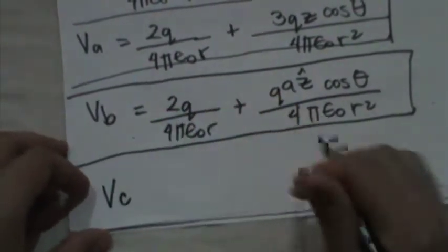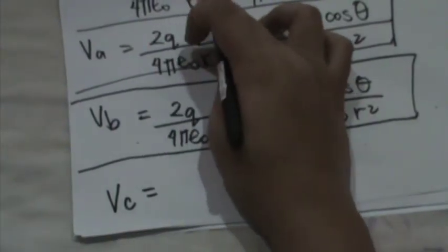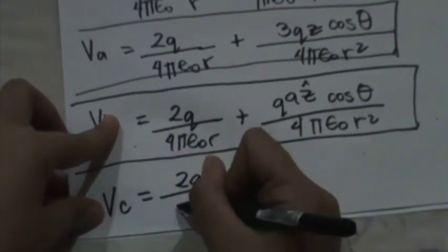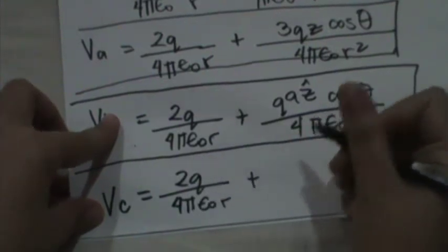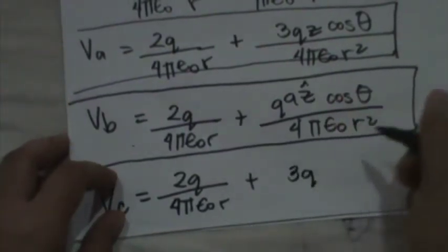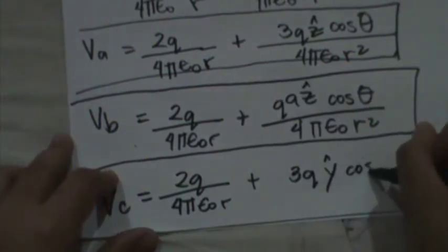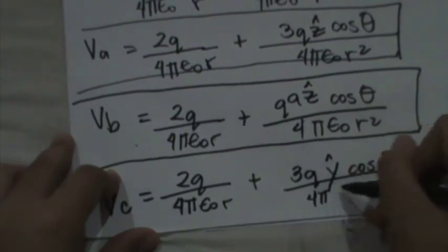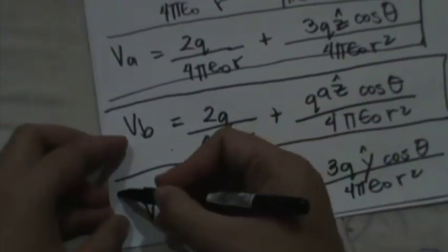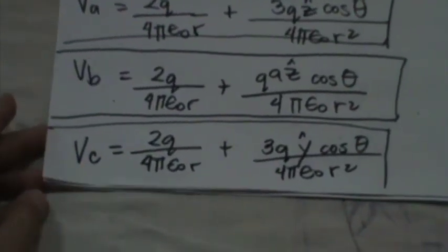For arrangement C, the monopole is also 2Q, giving 2Q over 4πε₀R. The dipole moment is 3QA ŷ, and using R̂ with the cosine theta factor, the dipole term is 3QA cosine θ over 4πε₀R². So the final potential for arrangement C is 2Q over 4πε₀R plus 3QA cosine θ over 4πε₀R².